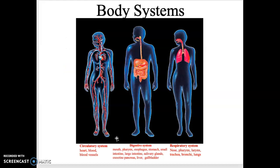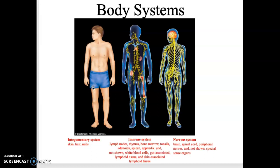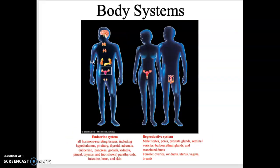Here are pictures of the major body systems: the circulatory system — heart and blood vessels; digestive system; respiratory system for breathing; urinary system to get rid of waste; skeletal system for support; muscular system for movement; integumentary system — hair, skin, and nails — for protection; immune system for protection; nervous system for communication; endocrine system also for communication; and the reproductive system for reproduction.